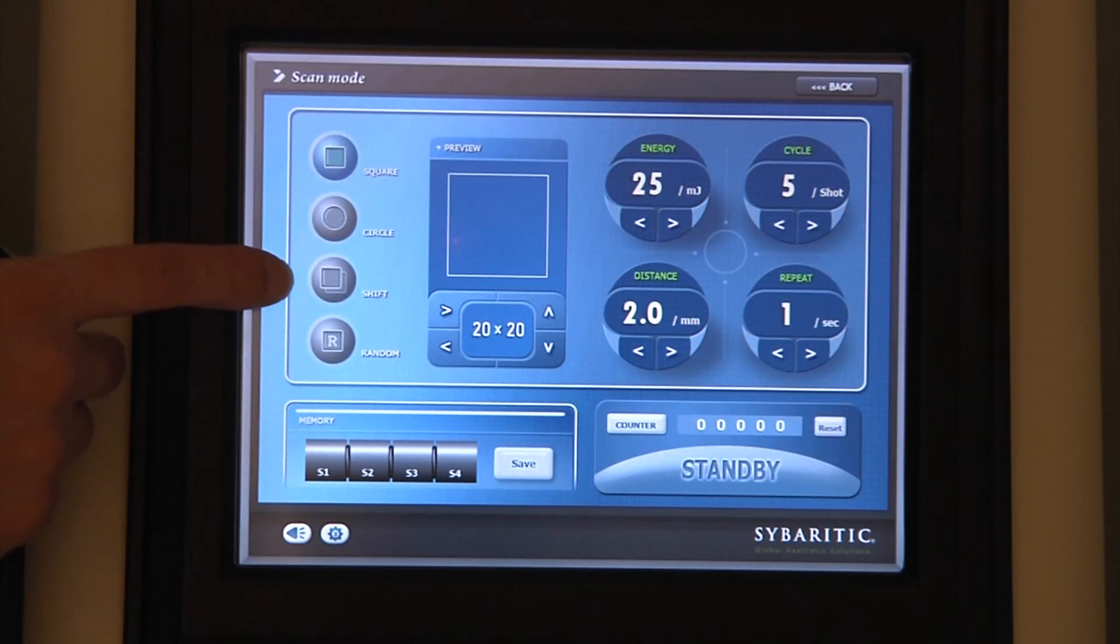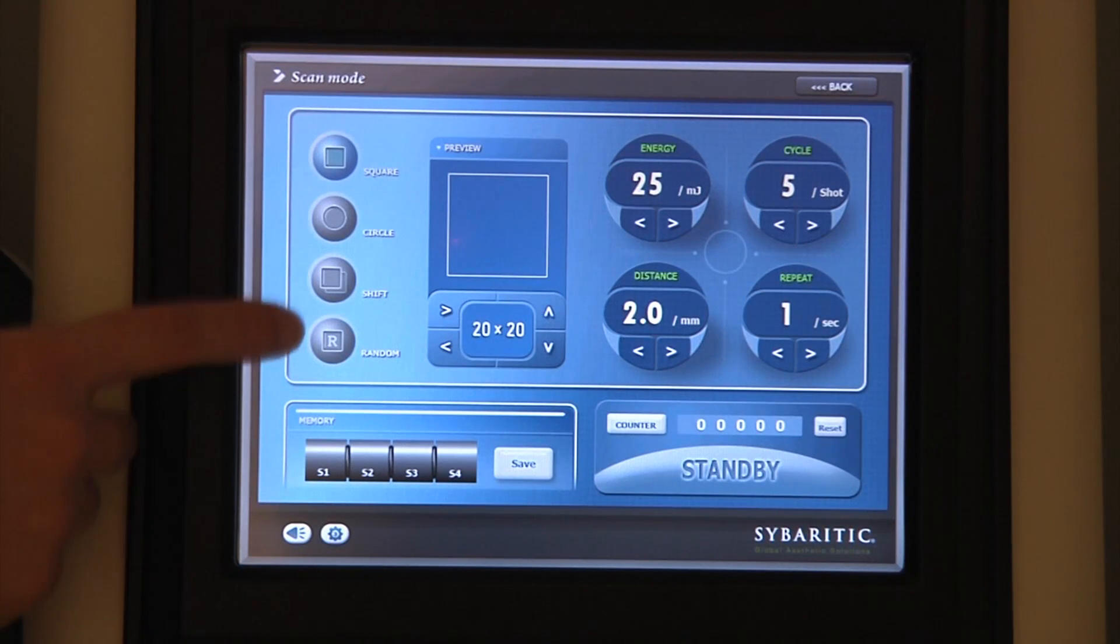In the shift mode of operation, we're able to do a single pass in whatever the scanning area geometry is, and then the device immediately paints a second pass slightly shifted off from the first pass. That's useful when we want to do multiple passes in which we don't want the microthermal zones to align.